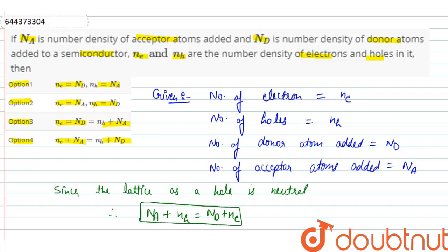That is, number density of acceptor atoms plus number density of holes is equal to number density of donor atoms plus number density of electrons.